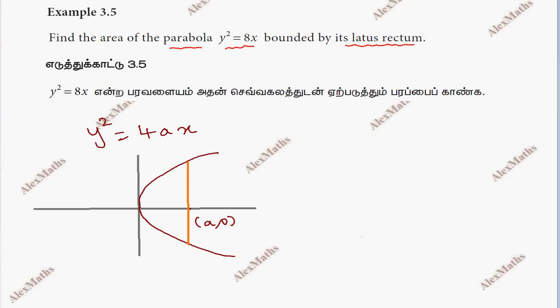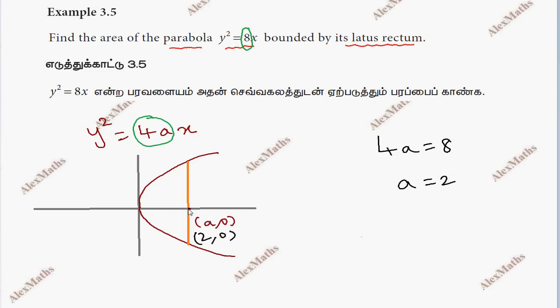For the parabola y² = 8x, we have 4a = 8, so a = 2. Therefore the focus is at (2, 0), and the latus rectum passes through the point (2, 0).